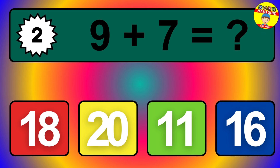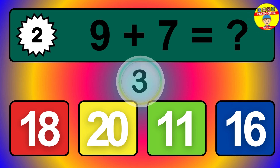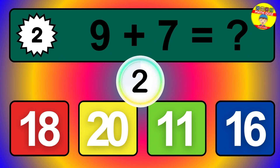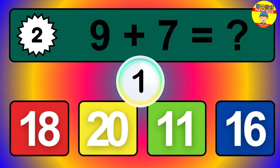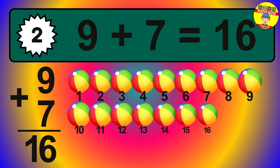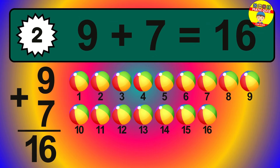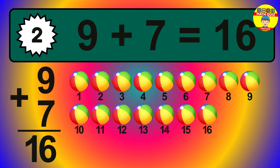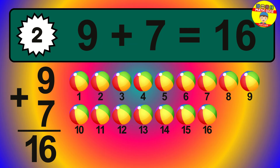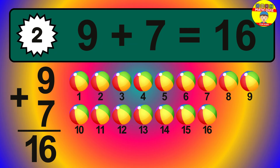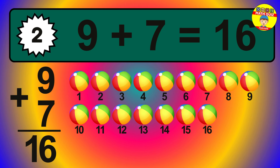Question 2. 9 plus 7 equals what? So the answer is 9 plus 7 is 16. Let's count it: 1, 2, 3, 4, 5, 6, 7, 8, 9, 10, 11, 12, 13, 14, 15, 16.